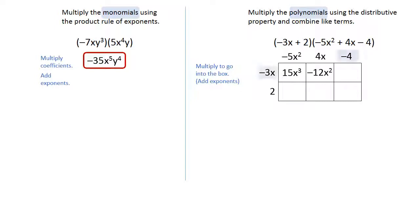In the third box, we're going to multiply the negative 3x times the negative 4, and that gives us positive 12x.